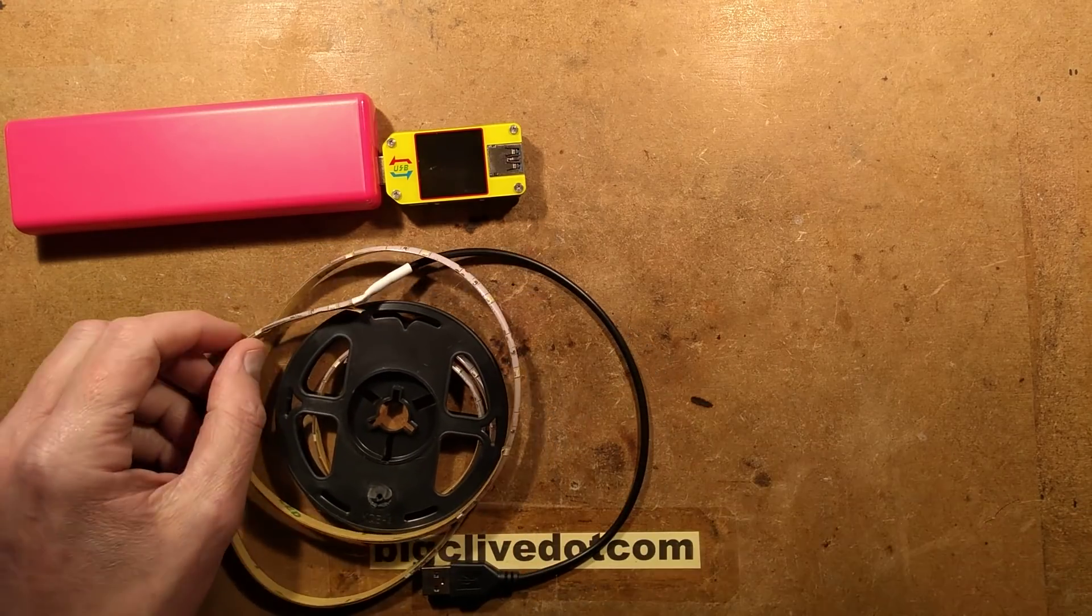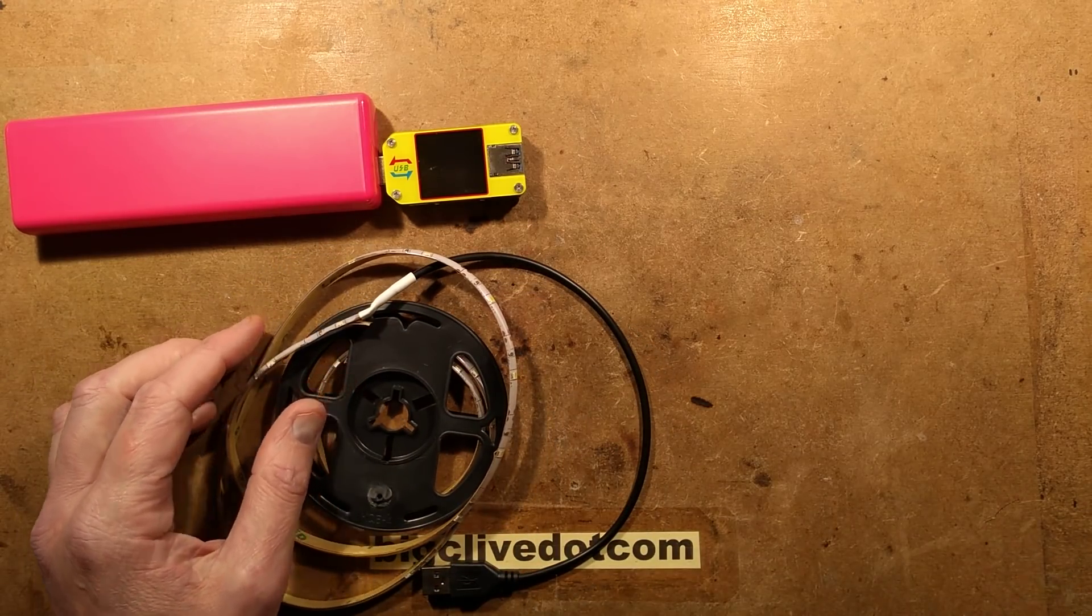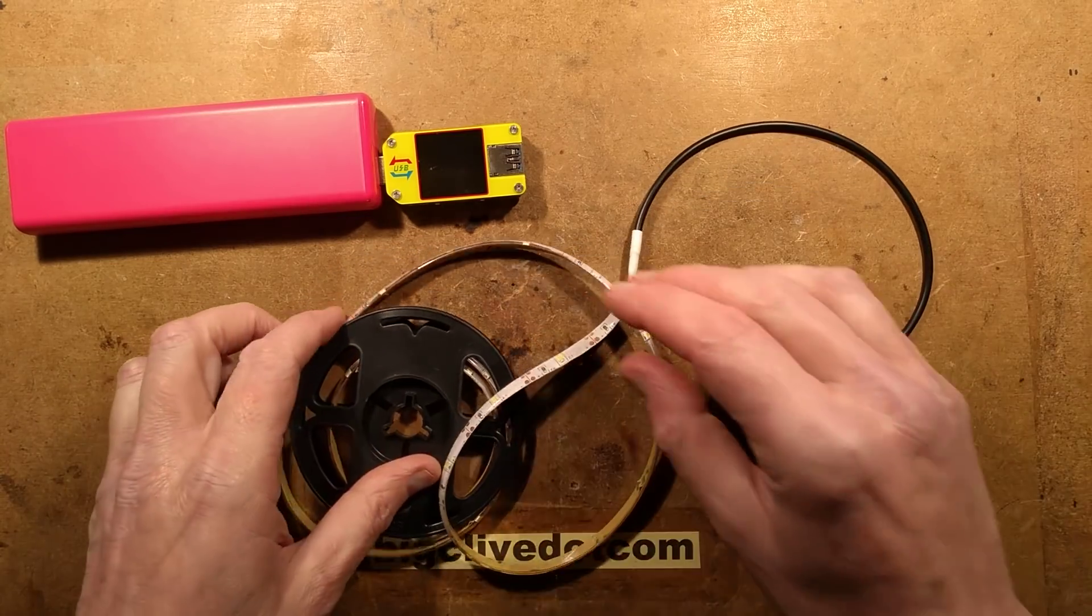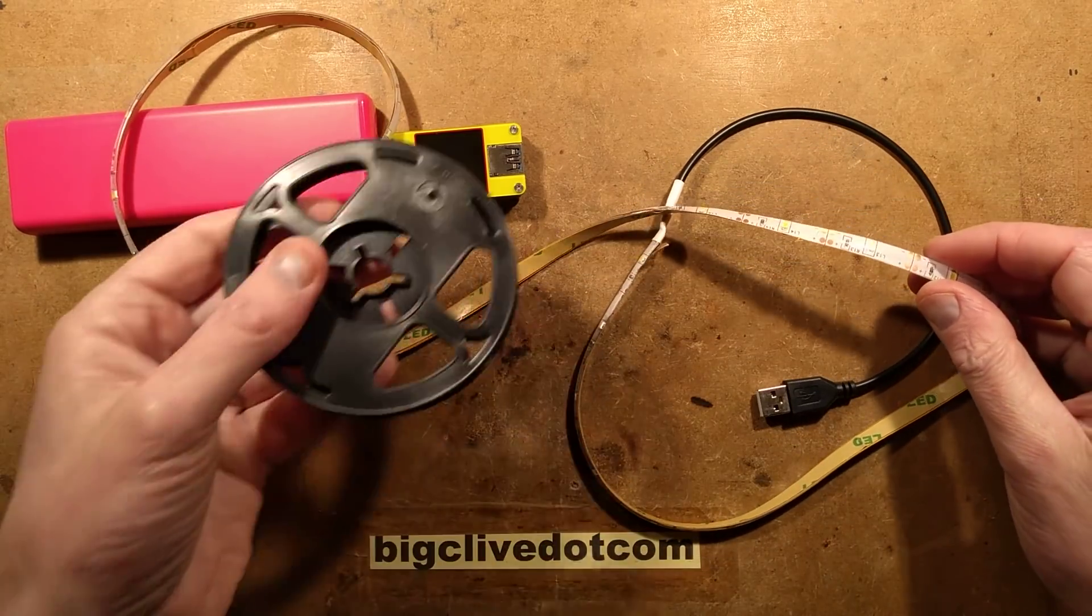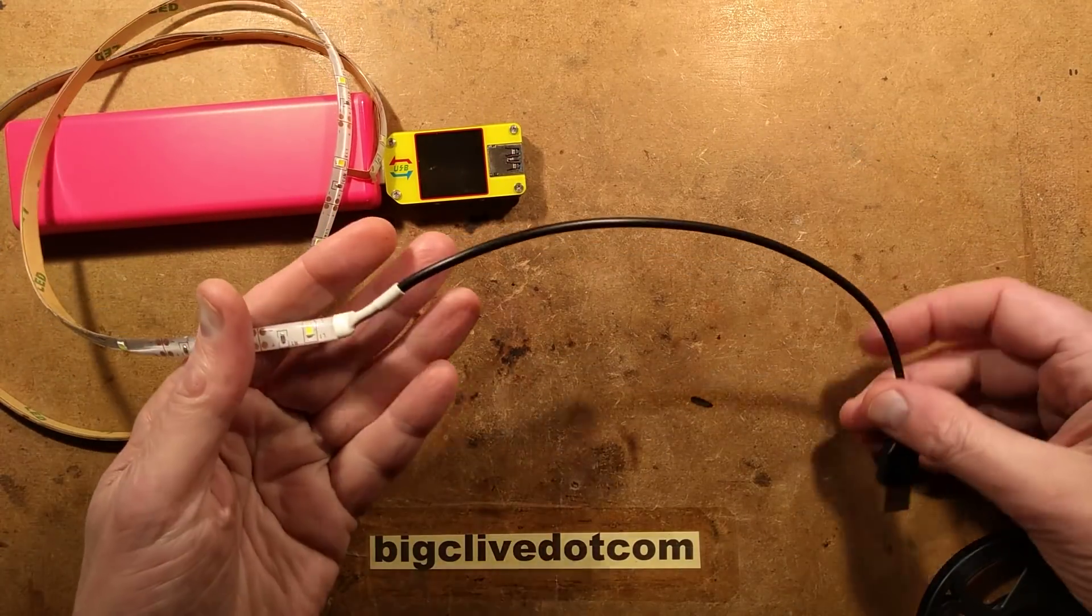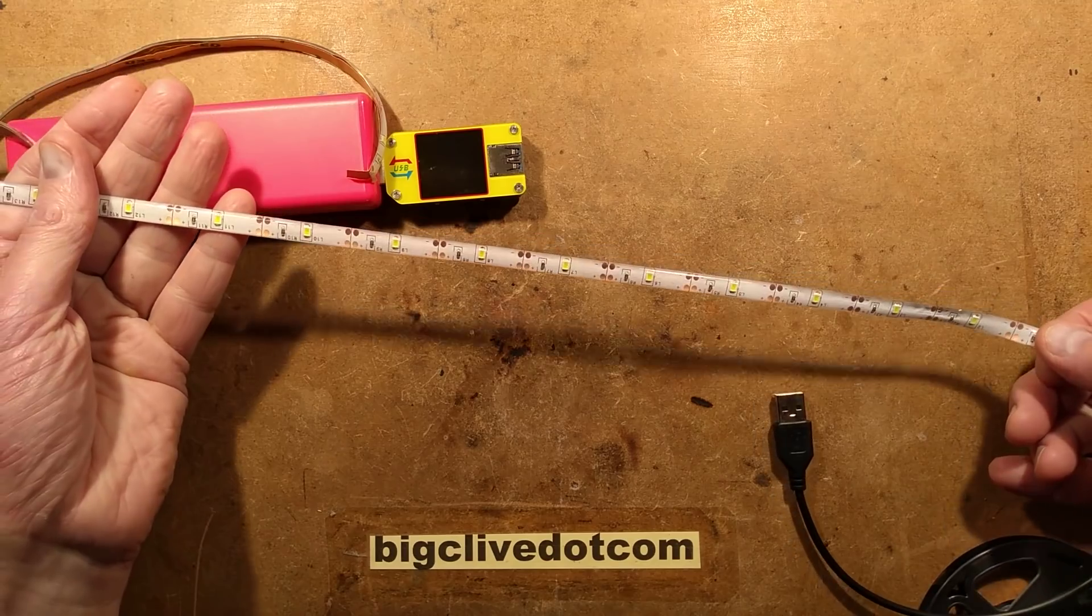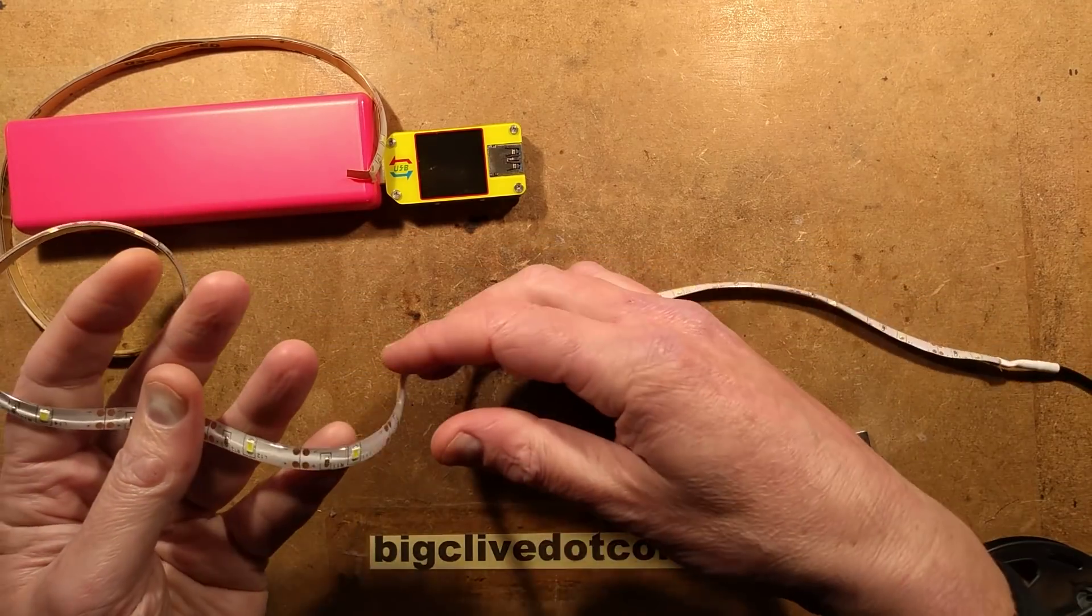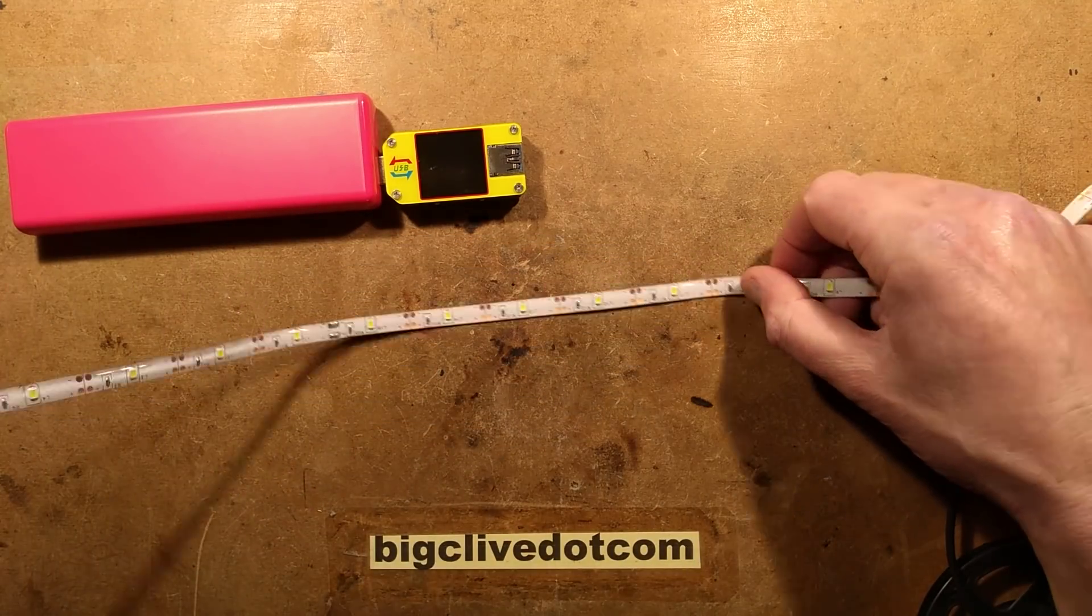What you get, well, they claim what you get is 1.3 meters of the strip. In reality, you get 1 meter of strip on a little plastic reel, and you get a cable which adds up to the other 300 millimeters, but it is basically just 1 meter of strip, and it's the type that's got 30 LEDs along it.